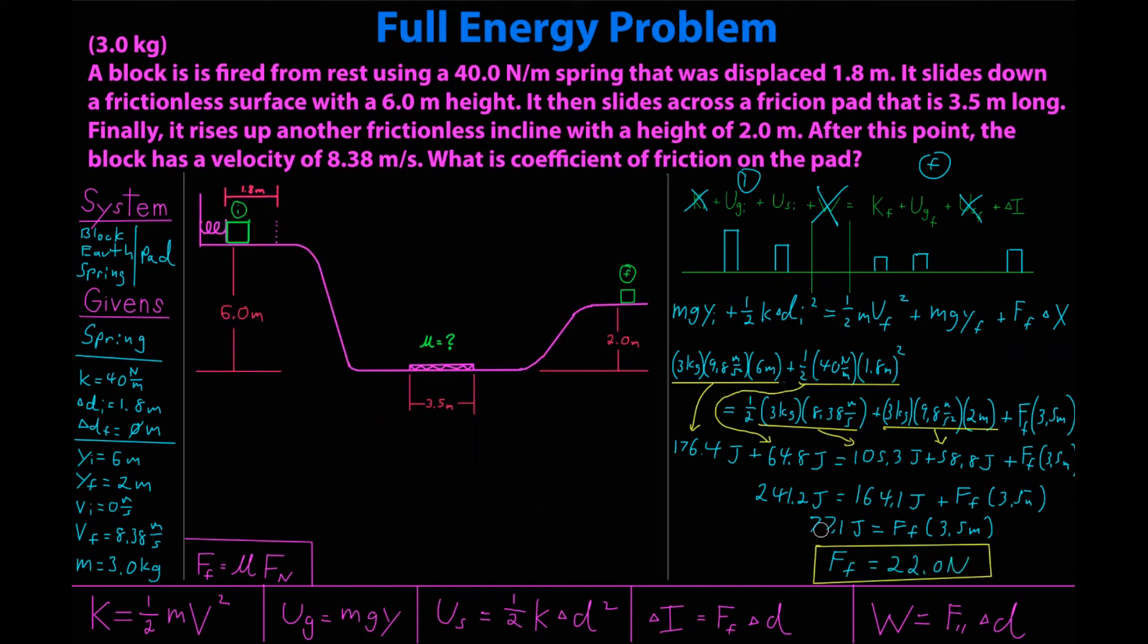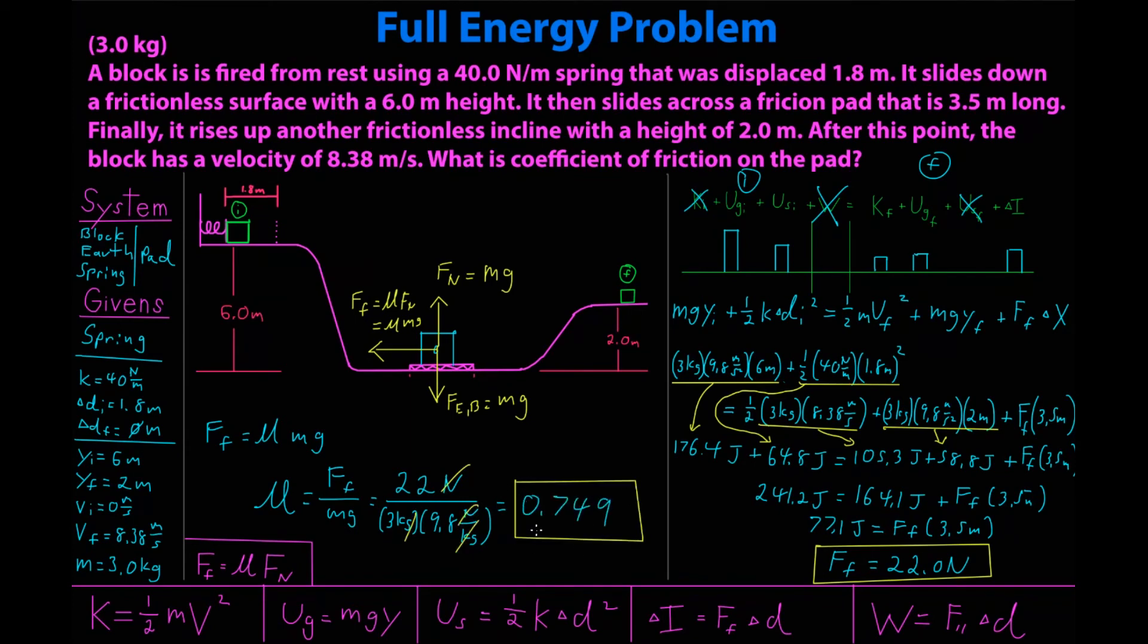Are we done? No, we are not because we are not after the force friction, although it is very useful because we are after mu, the coefficient of friction. So, I'm actually going to borrow this little area here and do a force diagram of the block as it moves over the friction pad. I have force earth on block, which is mg. Force normal, since this is a horizontal surface, this is also mg. And force friction, which is mu times force normal, which is mu mg. So, since force friction equals mu mg in this case, mu is force friction over mg, which is 22 newtons over 3 kilograms times 9.8 newtons per kilogram. All my units cancel here, and I get a coefficient of friction of 0.749.